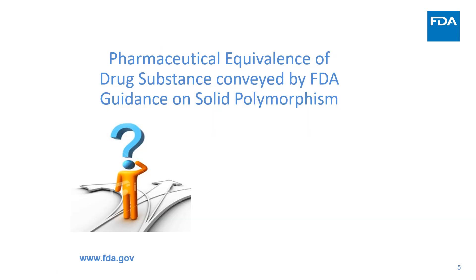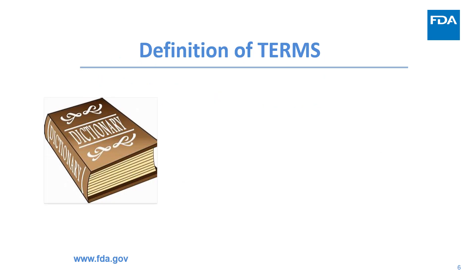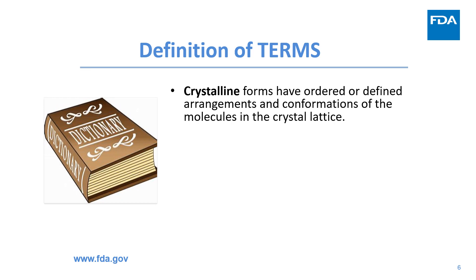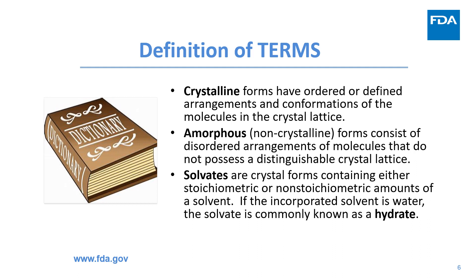Pharmaceutical equivalents of drug substance were further addressed by FDA guidance on solid polymorphism. In this guidance, polymorphic forms refer to crystalline and amorphous forms as well as solvate and hydrate forms. Crystalline forms have ordered or defined arrangements and conformations of the molecules in the crystal lattice. Amorphous or non-crystalline forms consist of disordered arrangements of molecules that do not possess a distinguishable crystal lattice. Solvates are crystal forms containing either stoichiometric or non-stoichiometric amounts of a solvent. If the incorporated solvent is water, it is commonly known as a hydrate.